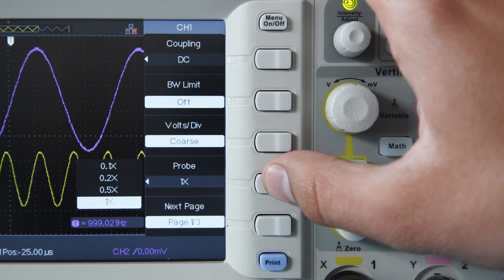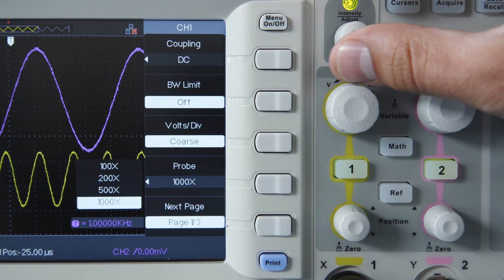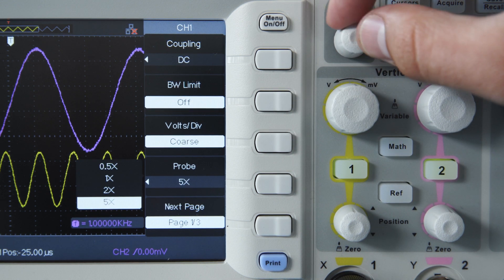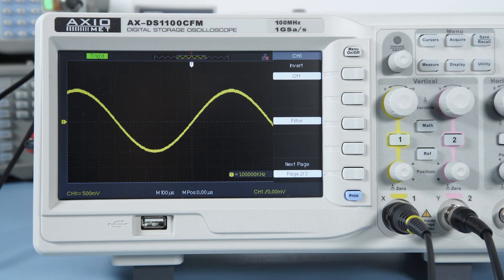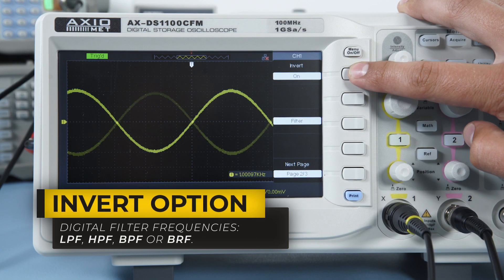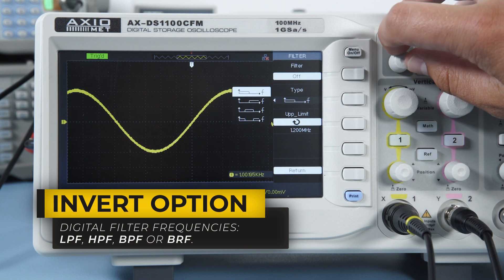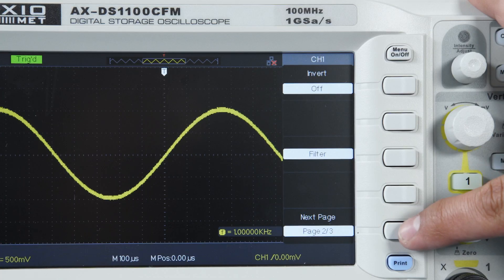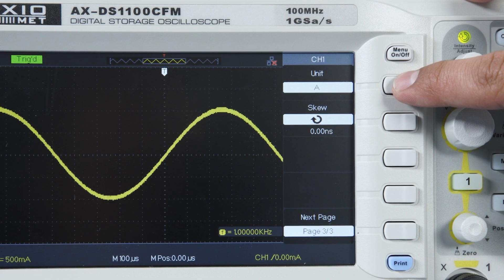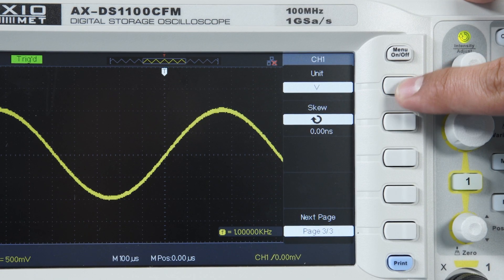Use the Universal knob to set probe attenuation ratio between 0.1 and 10,000. On the second page, we can find the Invert option and you can set a digital filter with the desired frequencies. On the last page, you can change volts to amperes or perform a skew correction.